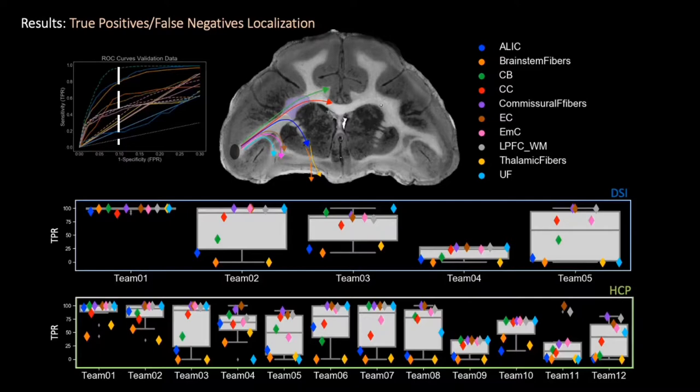Here are the results for all the teams for the submissions that used the DSI acquisition scheme on the top and the HCP acquisition scheme on the bottom. Box plots show the overall true positive rate for each team, and the different colors represent the different bundles. On a positive note, most submissions correctly reconstructed bundles close to the injection point, while most of them failed to correctly recover bundles far from the injection point and located at branching regions.